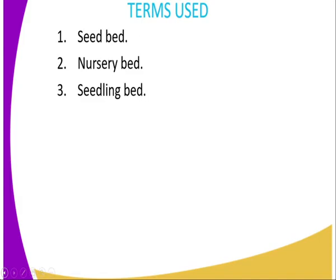What is a nursery bed? A nursery bed is a piece of land which is prepared for raising seedlings which are to be transplanted later. The third term is seedling bed. This is a special type of nursery bed for raising overgrown seedlings — big seedlings from the main nursery — which are transplanted and grown there before the time of transplanting to the main field is reached.